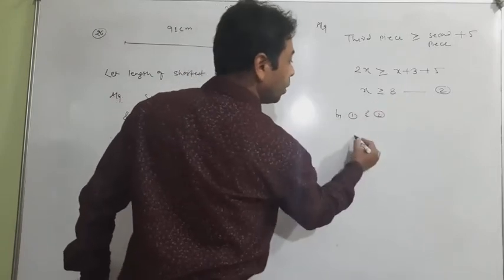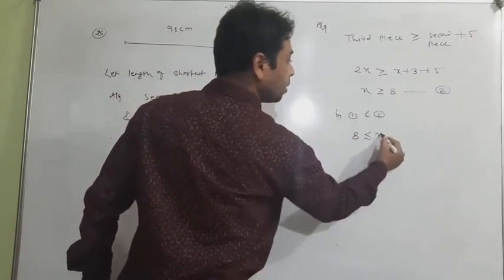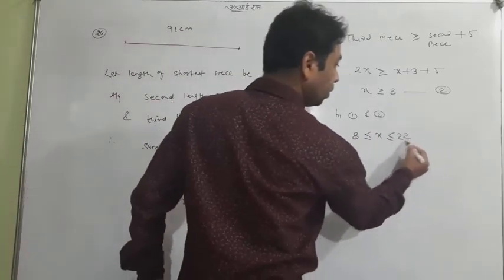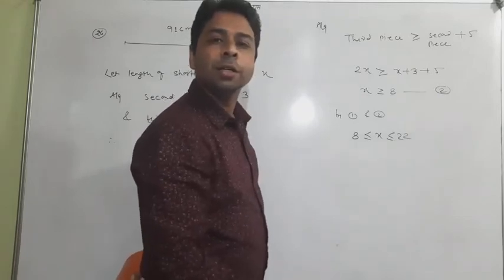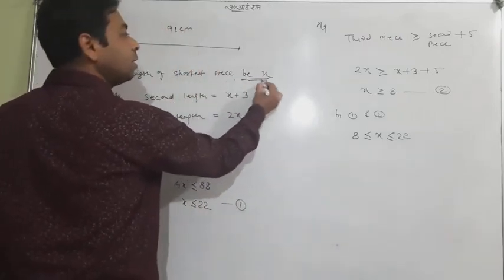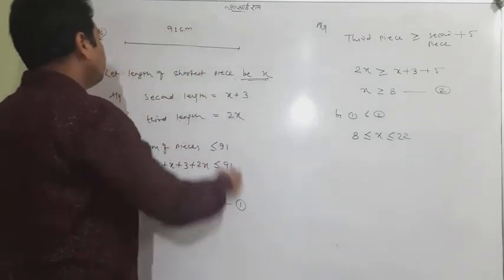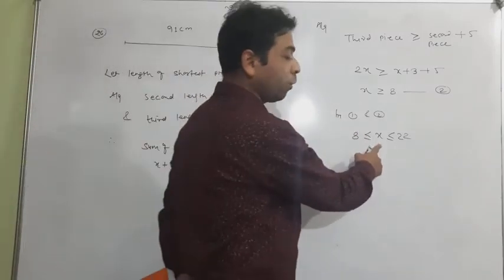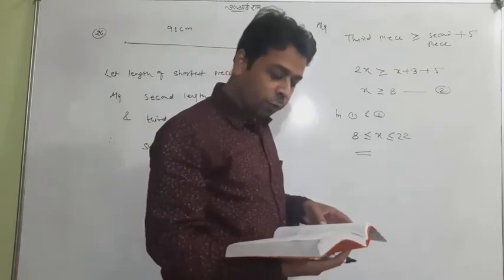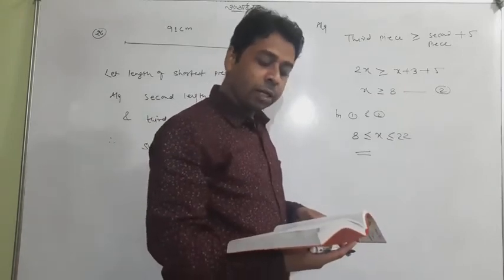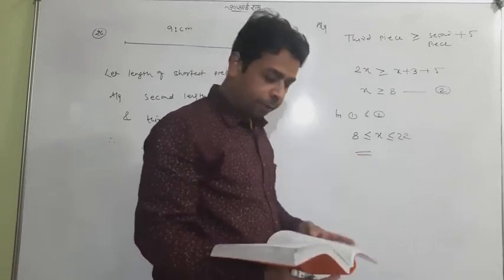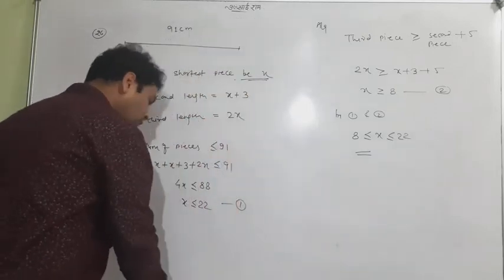Combining both conditions: x ≥ 8 and x ≤ 22, so 8 < x ≤ 22 — wait, x ≥ 8 and x ≤ 22, meaning 8 ≤ x ≤ 22. The shortest piece was x, and the possible lengths range from 8 to 22. So the answer is that the possible lengths of the shortest piece are from 8 cm to 22 cm. This completes Exercise 6.1.